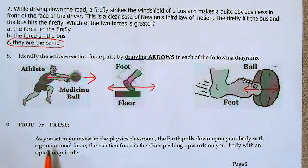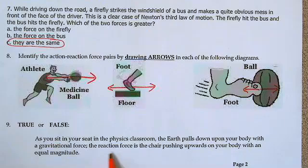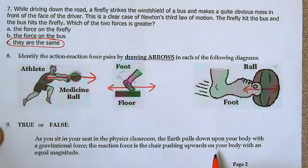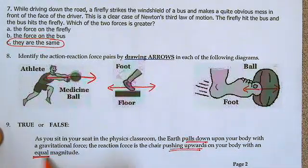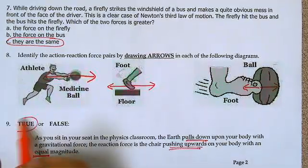Number nine: as you sit in your seat in the physics classroom, the earth pulls down on your body with a gravitational force. The reaction force is the chair pushing upwards on your body with an equal magnitude. So the earth is pulling down and the chair is pushing up with equal forces — that would be true.